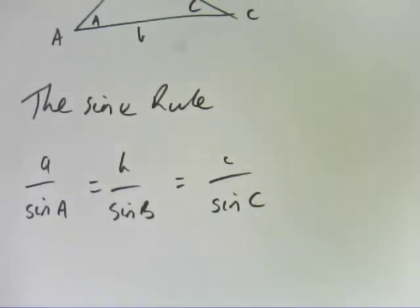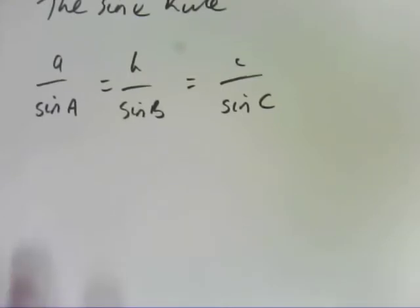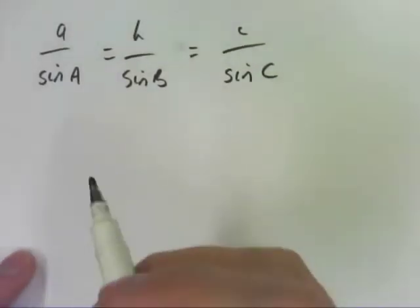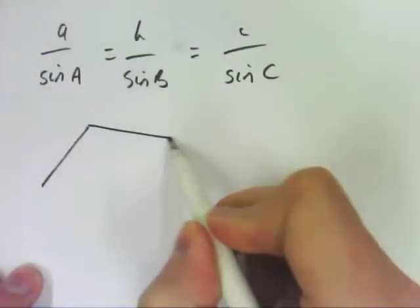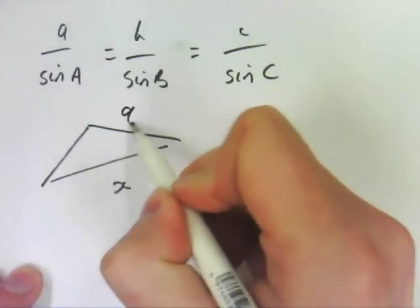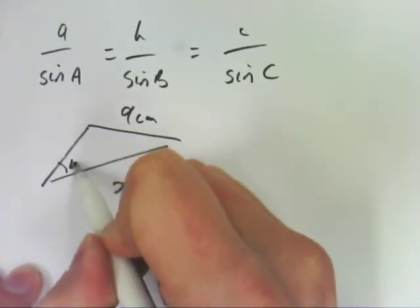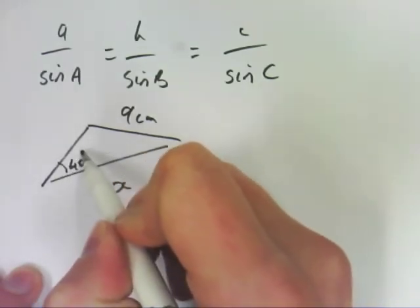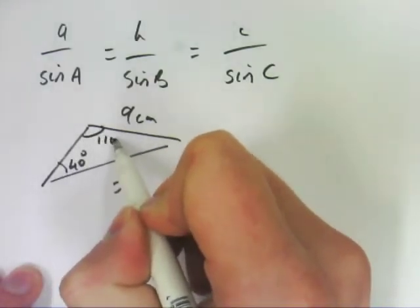So the easiest way to explain how you go about this is to actually do a question. So I'm going to do question 1A for you, or with you, I should say. So this is a non-right-angled triangle where X is there, this is 9 centimeters, this is 40 degrees, and this is 110 degrees.